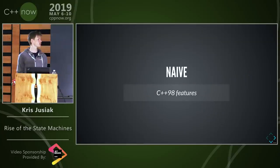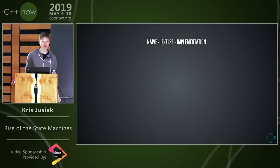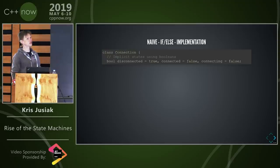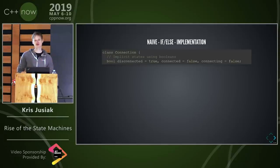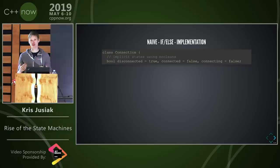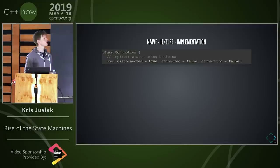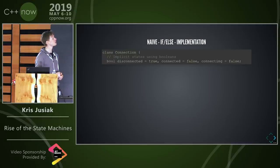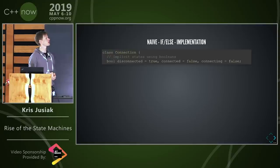Naive implementation: let's take a look at if/else — I guess everyone was there at some point. Usually when we start with a naive implementation we put some boolean variables in our state, which are implicit. Maybe we're not aware that it's a state machine at the time, but it's quite obvious when you see it later.